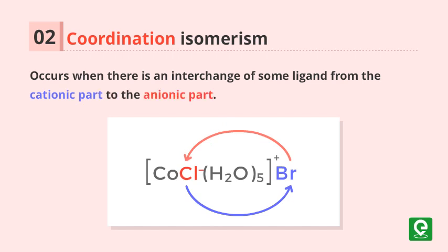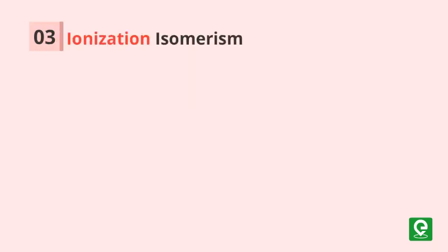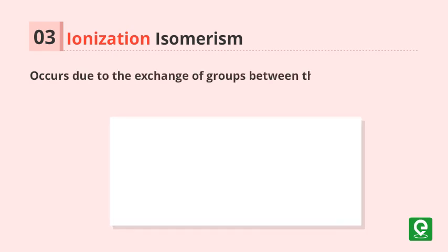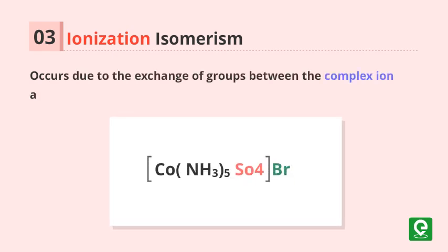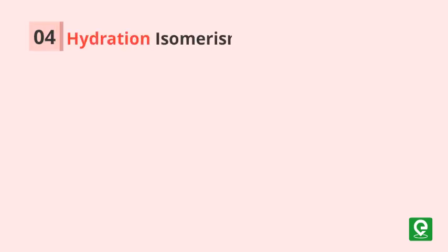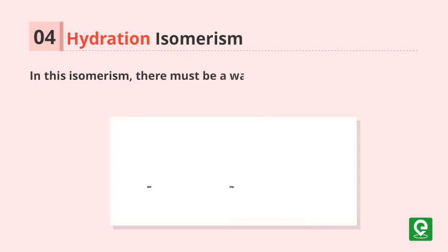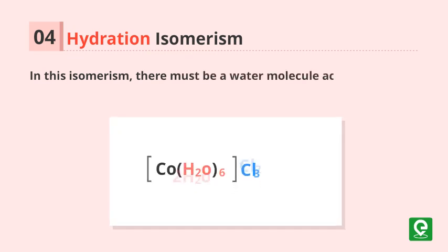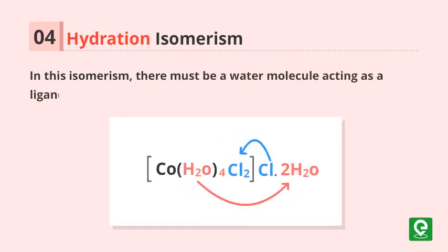Number two: coordination isomerism occurs when there is an interchange of some ligands from the cation part to the anion part. Number three: ionization isomerism occurs due to the exchange of groups between the complex ion and the ions outside it.